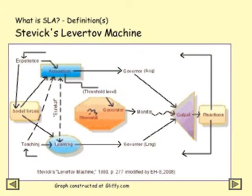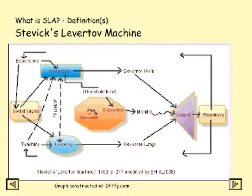Stevik adds a governor for acquisition and a governor for learning. Also, the eureka effect: when a learner says, 'Oh, I learned that in school — that's what it goes here,' and it becomes part of acquisition, this implies that you can't separate acquisition and learning completely. Learning leaks into acquisition, just as teaching can have an effect on what you acquire as well as what you are learning. At the center of the Levertov machine is the rheostat that turns up the generator. Students notice things more when they're turned on, when that rheostat is going up. Their threshold of acquisition is lowered and they are able to learn things better.